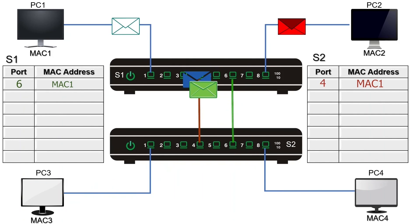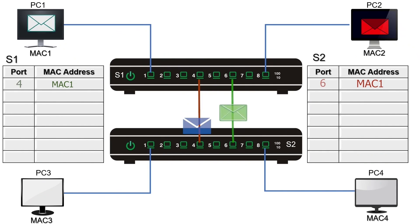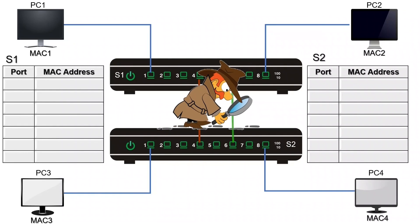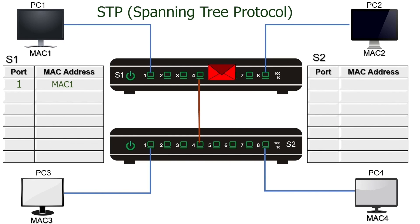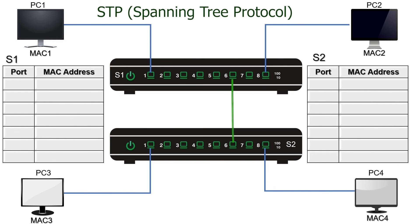In real-life networks, many devices generate many broadcast frames every second. Considering these facts, if a loop exists, the network will not work. However, Ethernet switches are smart enough to automatically detect and remove loops. They use a protocol called Spanning Tree Protocol to deal with loops. The STP protocol creates a virtual topology of the entire network and disables ports that create a loop. If the primary link goes down, it automatically enables the disabled port to maintain connectivity.